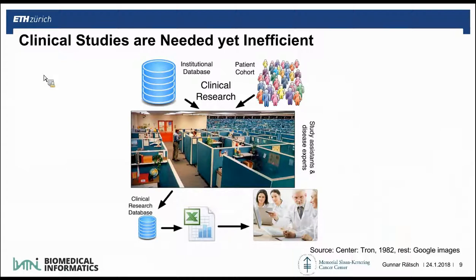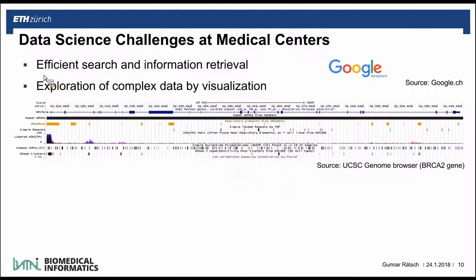This data is already used in clinical studies, which are needed to show the efficacy of certain treatments. Usually what happens is that you have an institutional database, a patient cohort, and then people who go into this database, read the medical documents, and extract certain pieces of information needed for a clinical trial. Then they enter this information into the clinical research database. At a hospital like MSKCC, there are lots of clinical trials going on, and there are 500 full-time employees who do this all the time. From a computer science perspective, that's totally inefficient and totally unacceptable — we have to solve this as computer scientists.